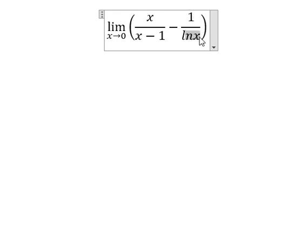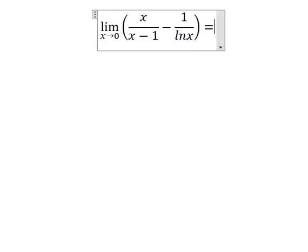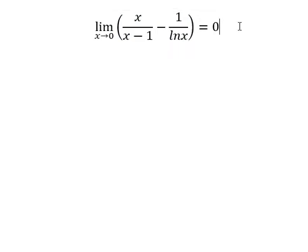When s approaches zero, ln(s) approaches negative infinity. So one divided by negative infinity equals zero. Therefore, this limit equals zero. This is the end — thank you for watching.